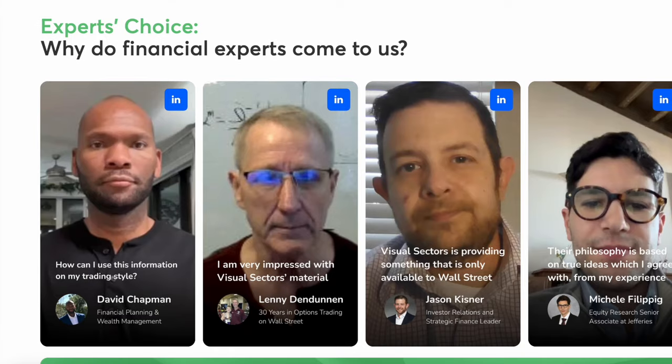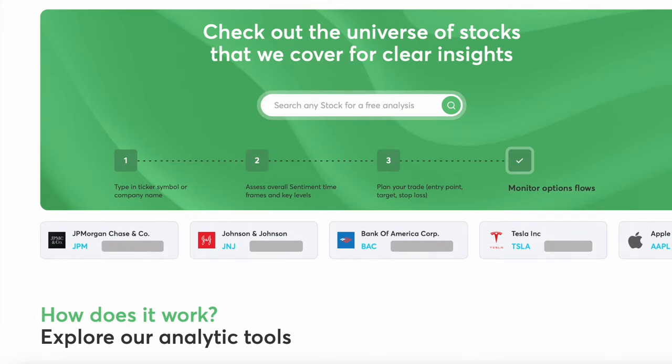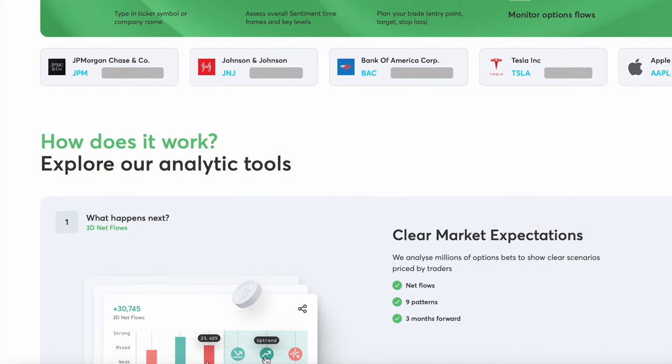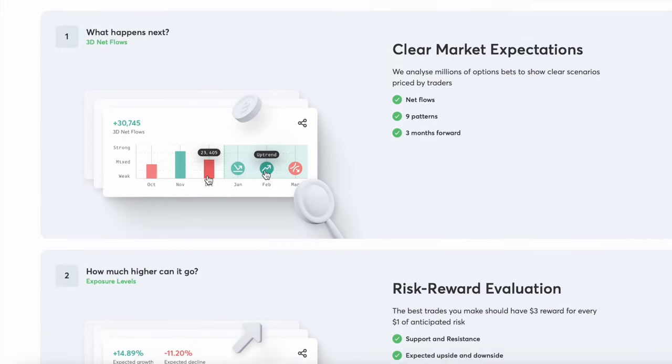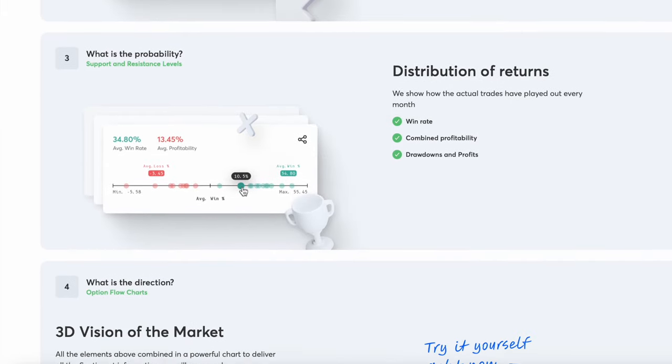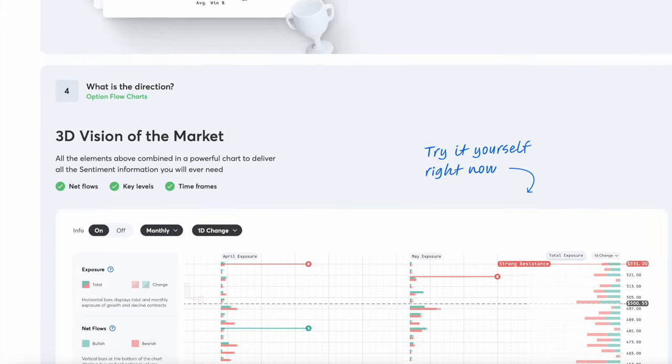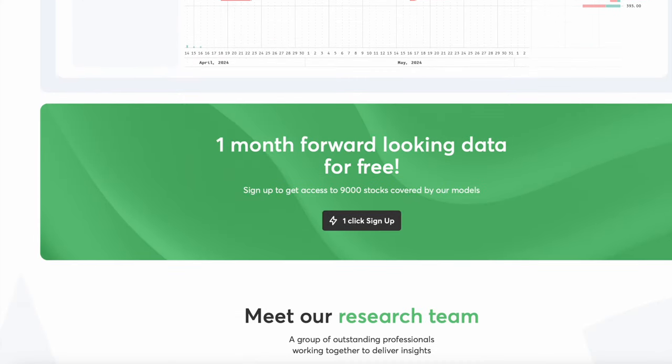The team behind the product is a mix of Wall Street veterans and data scientists and they regularly publish public predictions in their newsletters and on social media which you can see. They've calculated that they've had an 82.3% win rate on those predictions so far. So check out Visual Sectors using the link in the description for a totally free seven-day trial and if you decide to sign up they'll also give you a 40% discount for the first two months.